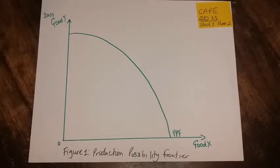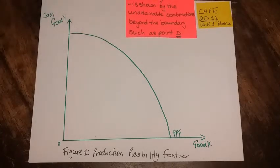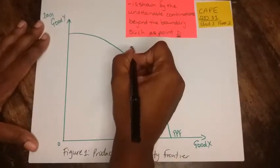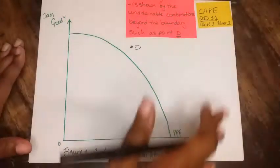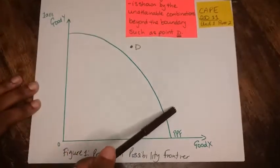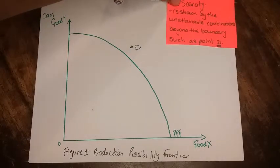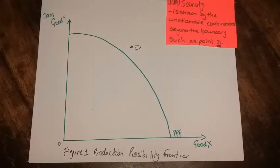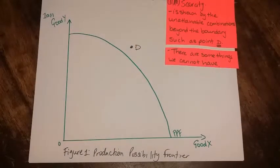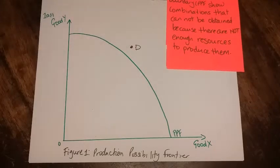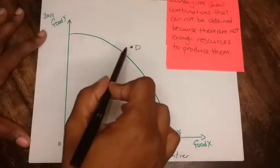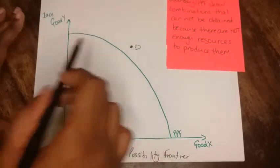You have to write about it and explain, and you also have to incorporate the diagram in your explanation. So scarcity is shown by a point such as D. It has to be outside of the boundary. All points outside the boundary are unattainable, meaning we can't get to such a point because there are some things that we cannot have. All points outside of the PPF show that there are combinations that we cannot access because we don't have the resources to obtain it.